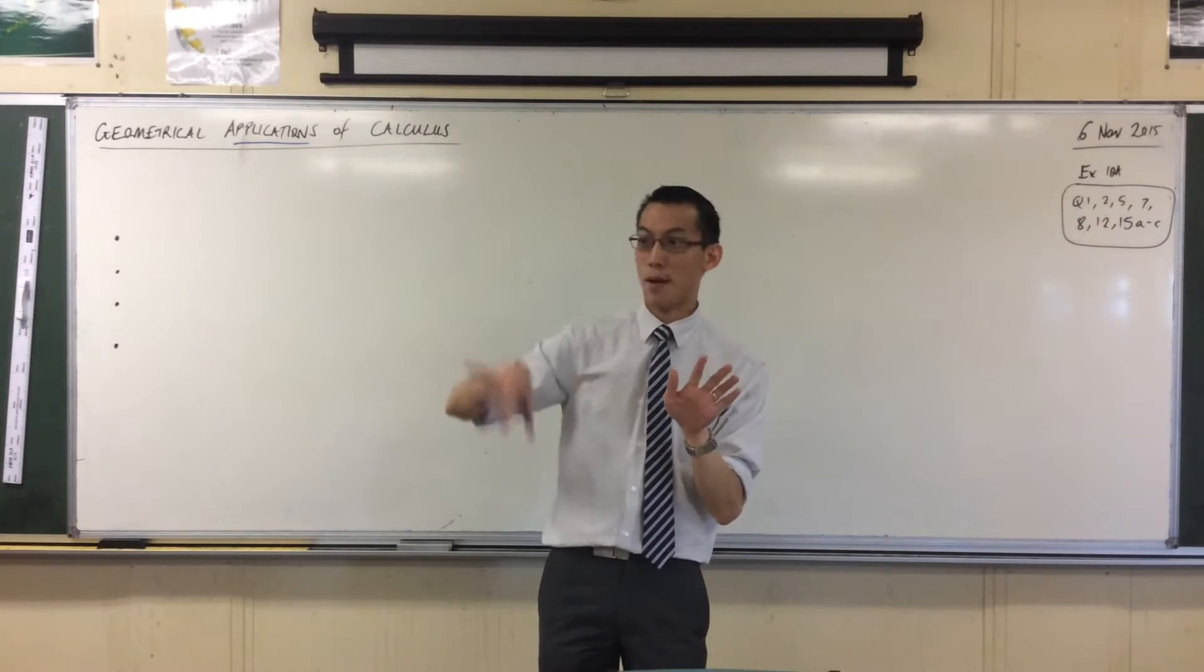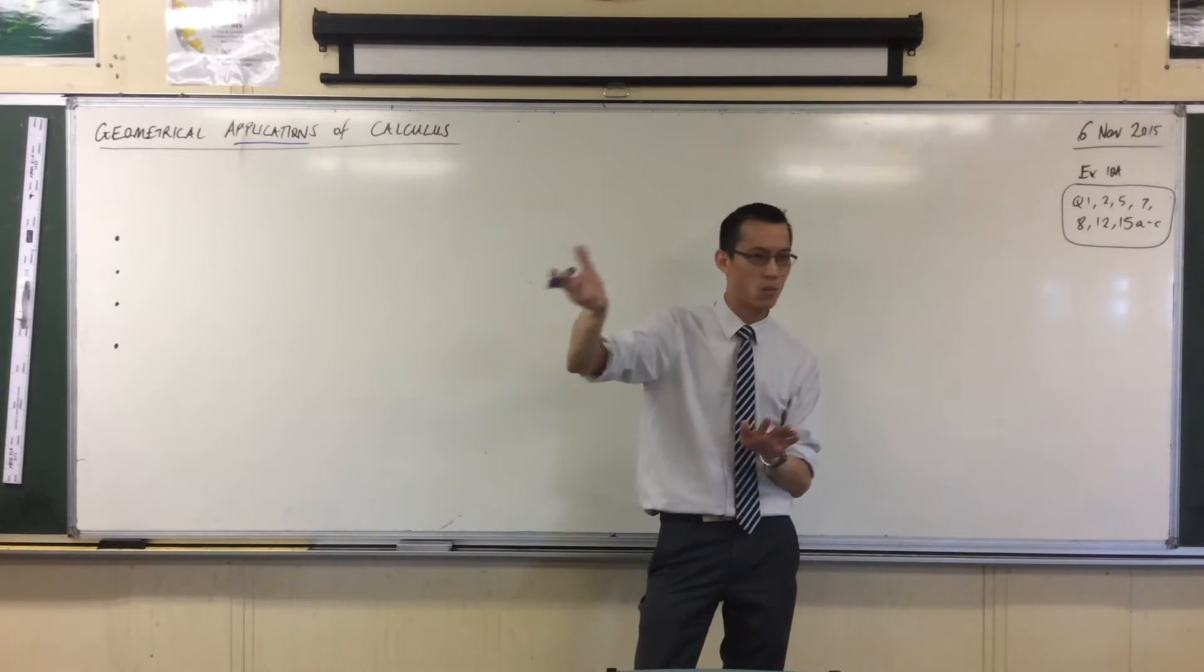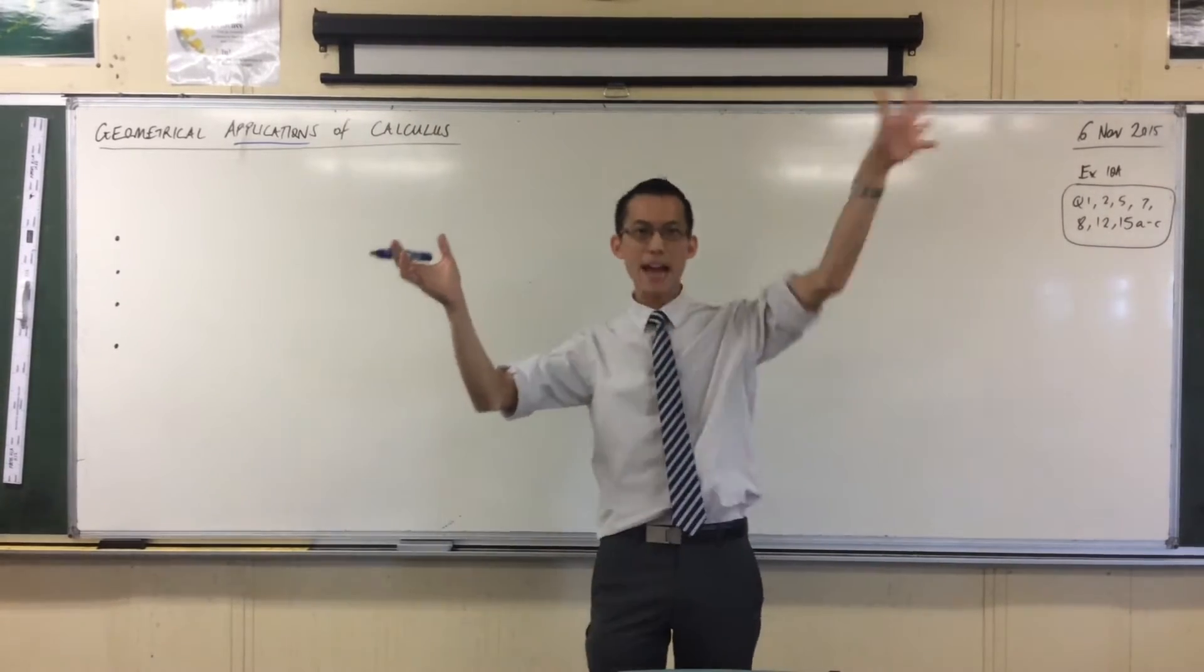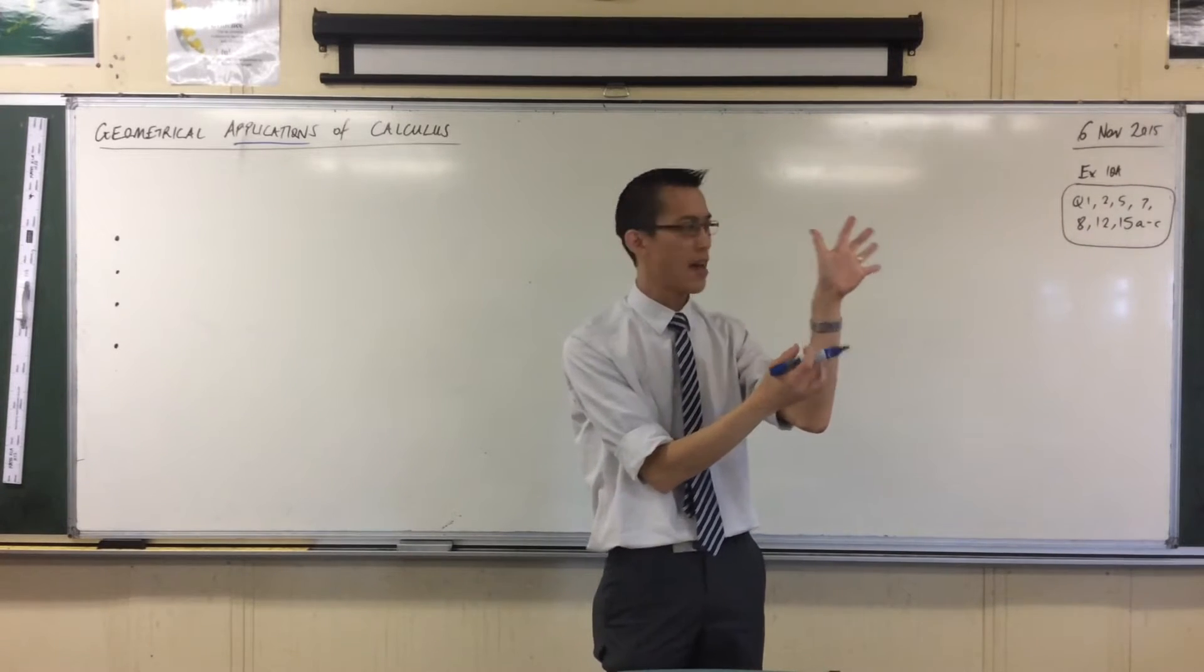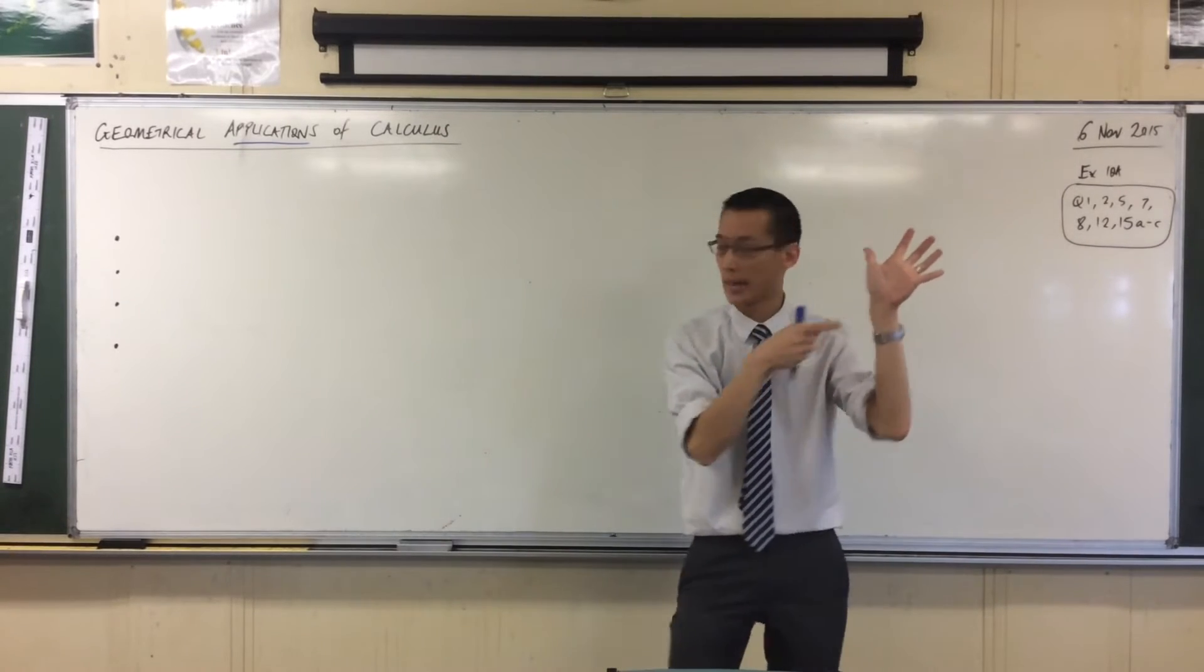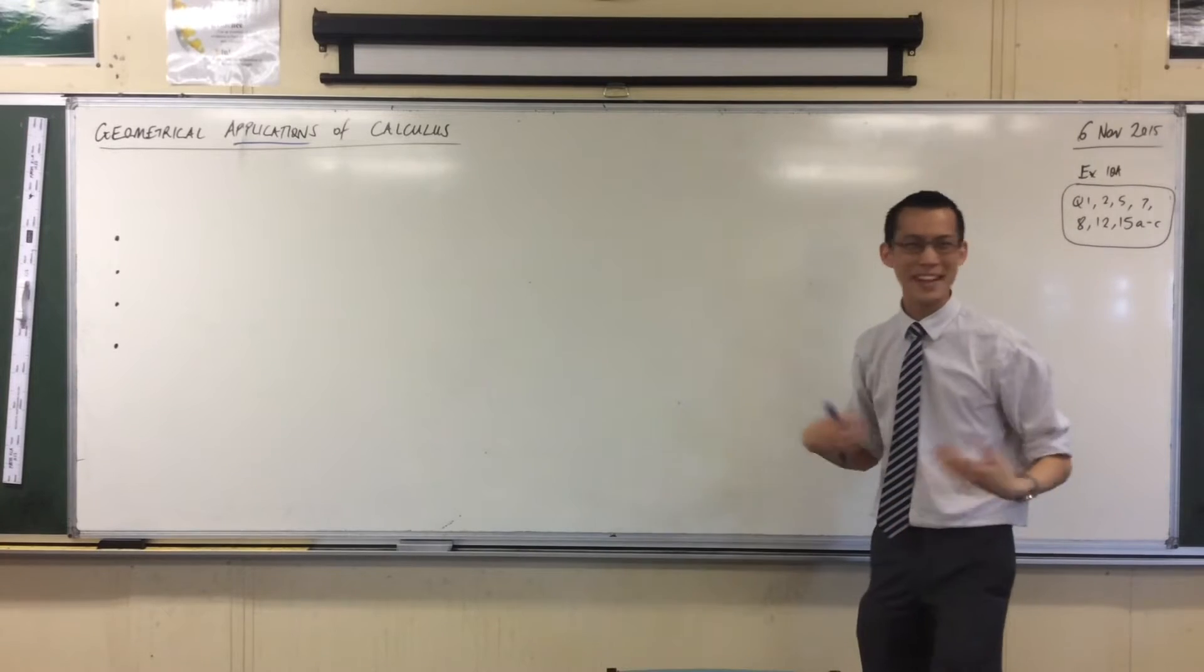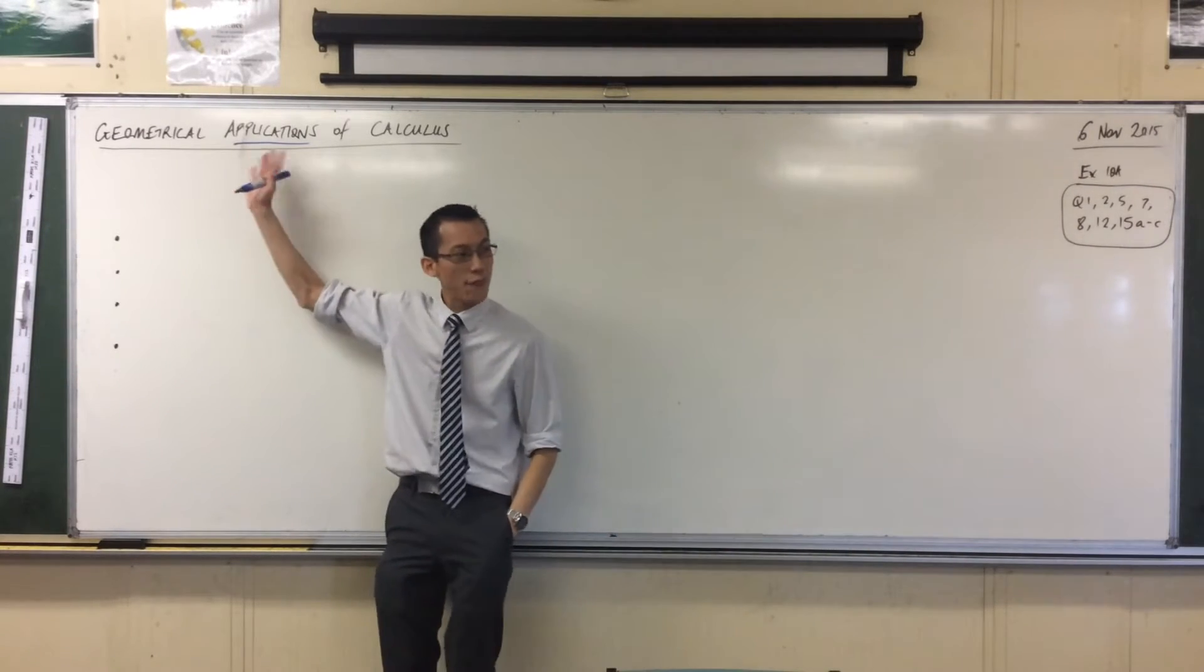Pure mathematics is kind of mathematics for its own sake. We're just going to play with these numbers or shapes just because we can. Whereas applied mathematics is we have problems that exist in the world and we want to use mathematics to solve these problems.